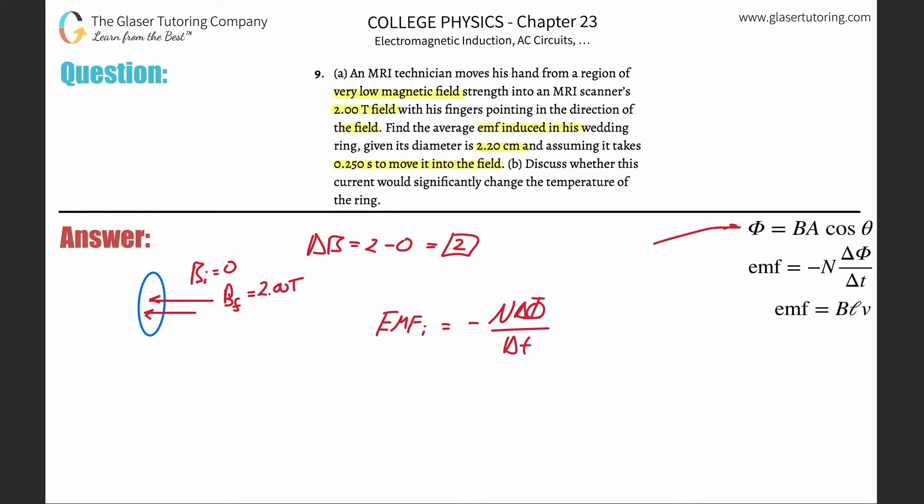Now the change in flux, I'm going to substitute the flux equation in. So this will work out to be that the EMF induced will be equal to negative number of turns multiplied by the change in the magnetic field. Because remember, if it's a changing magnetic flux, it's a result of either a changing magnetic field, changing area, or a changing angle. In this case we're dealing with a changing magnetic field.